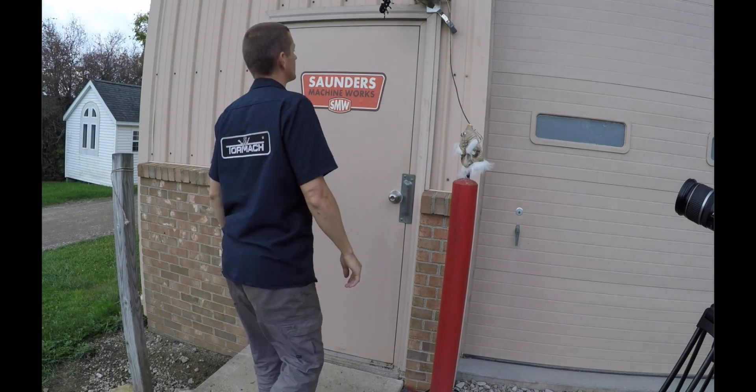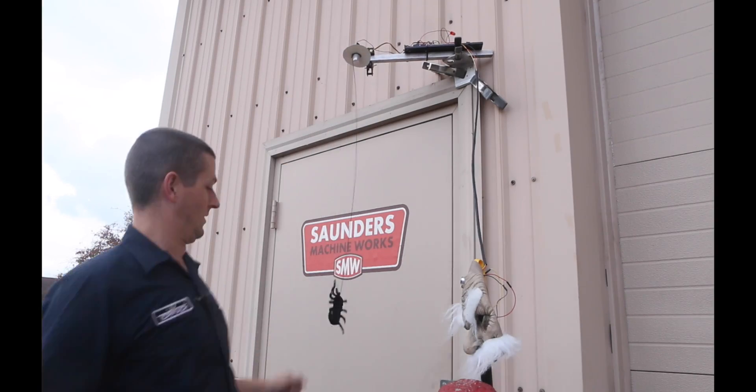Here's how this is going to work. The ping sensor is going to detect when someone approaches the door. As soon as they get close enough, and we'll set that distance, it's going to drop a spider down, hopefully surprising them or scaring them. And then it'll move back up and lift the spider back up and wait for the next victim. So it should be pretty fun.